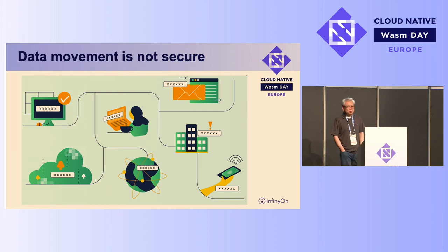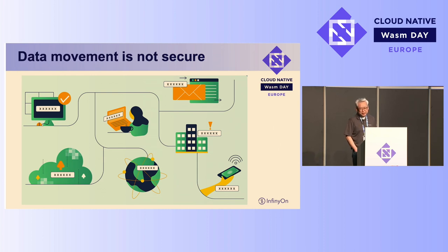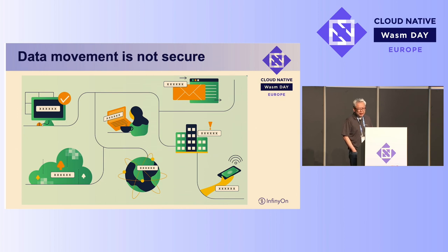There is also a security problem. Whenever you are moving data across the network, it creates the potential for hackers and other entities to steal your data. The zero trust model assumes there is basically no secure or trusted network — you have to operate with the mindset that your network is inherently insecure. The more data you move and the faster it moves, the harder it is to secure that data.